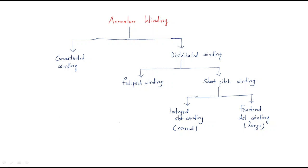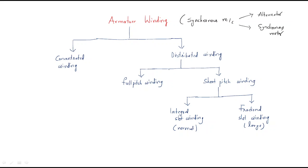Hello everyone. In this session we will discuss the next topic: armature winding. This armature winding is related to the synchronous machine. The synchronous machine includes two things — one is the alternator and another one is the synchronous motor. When we discuss the construction of the synchronous machine, it has two parts: stator and rotor.